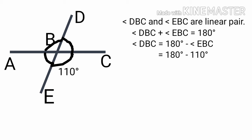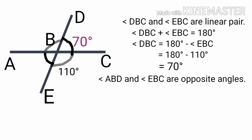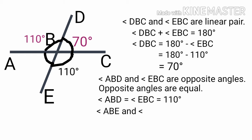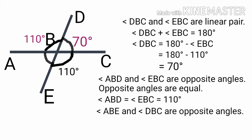Angle ABD and angle EBC are opposite angles. Opposite angles are equal, therefore angle ABD is equal to angle EBC, that is equal to 110 degrees. Angle ABE and angle DBC are opposite angles. Opposite angles are equal, therefore angle ABE is equal to angle DBC, that is equal to 70 degrees.